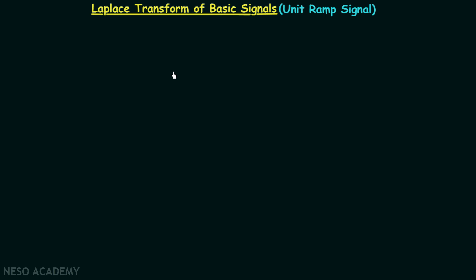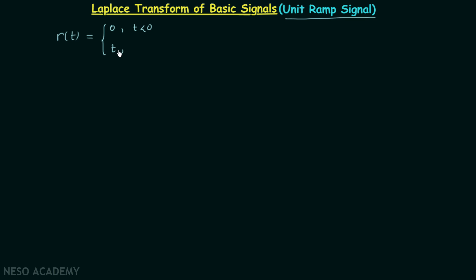In this lecture we will calculate the Laplace transform and region of convergence of the unit ramp signal. Our time domain signal is r(t), which is the representation of the unit ramp signal. The unit ramp signal is equal to 0 when t is less than 0, and equal to t when t is greater than or equal to 0.